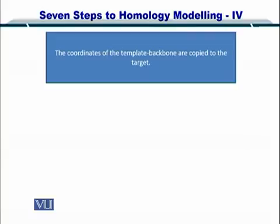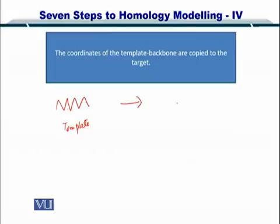The target structure is what you want to create. By starting at each amino acid in the template, you find its corresponding X, Y and Z coordinates from the PDB and then you bring it to the target structure. Let's say here is your template and you want to use it to create a target. The PDB gives you the X, Y and Z of each alpha carbon.